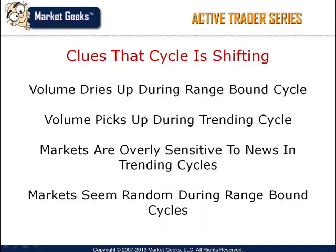There are many clues that markets provide that can alert us to changes in the market cycle. For example, when the stock market changes from trending to range-bound, both volume and volatility decrease. When markets are beginning the trending cycle, the lows of the day usually occur in the morning and the highs typically occur towards the closing bell — this obviously occurs in the bullish phase. In a bearish phase of a trending cycle, the highs occur in the morning and the lows occur in the evening.